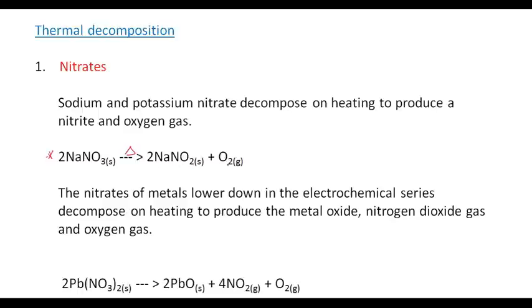The nitrates of metals lower down in the electrochemical series decompose on heating to produce a metal oxide, nitrogen dioxide gas, and oxygen gas. So we have a slightly different reaction from metals lower down. For example, 2Pb(NO3)2 produces 2PbO plus 4NO2 plus O2. This is an important equation, you need to be able to write it and balance it.